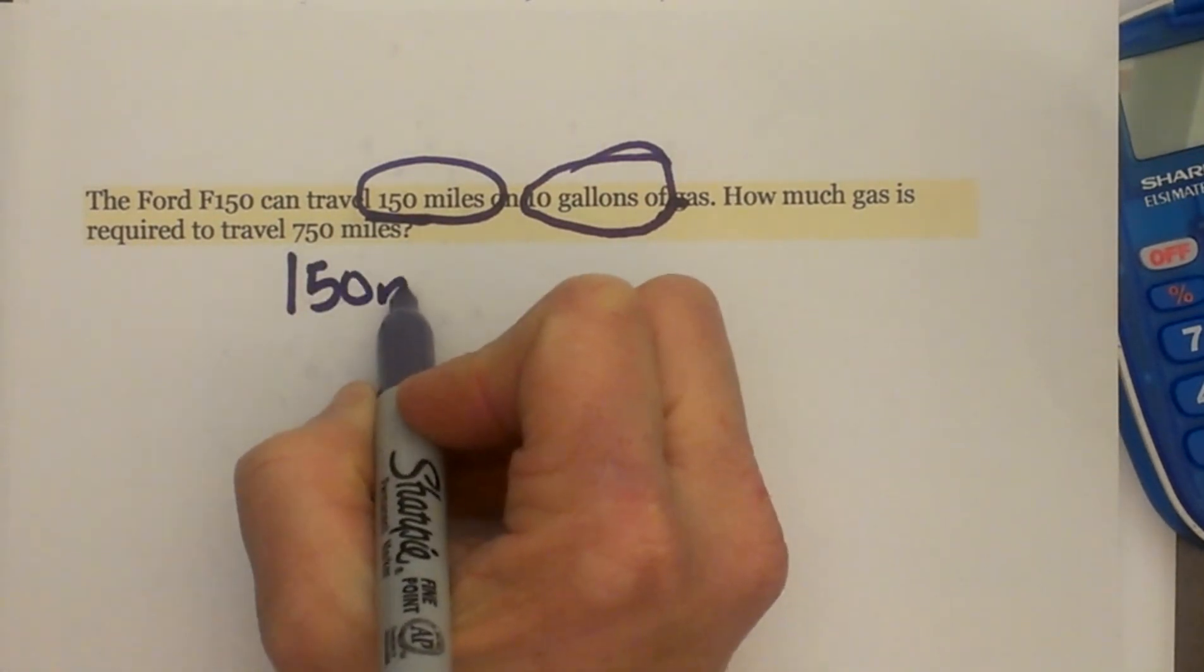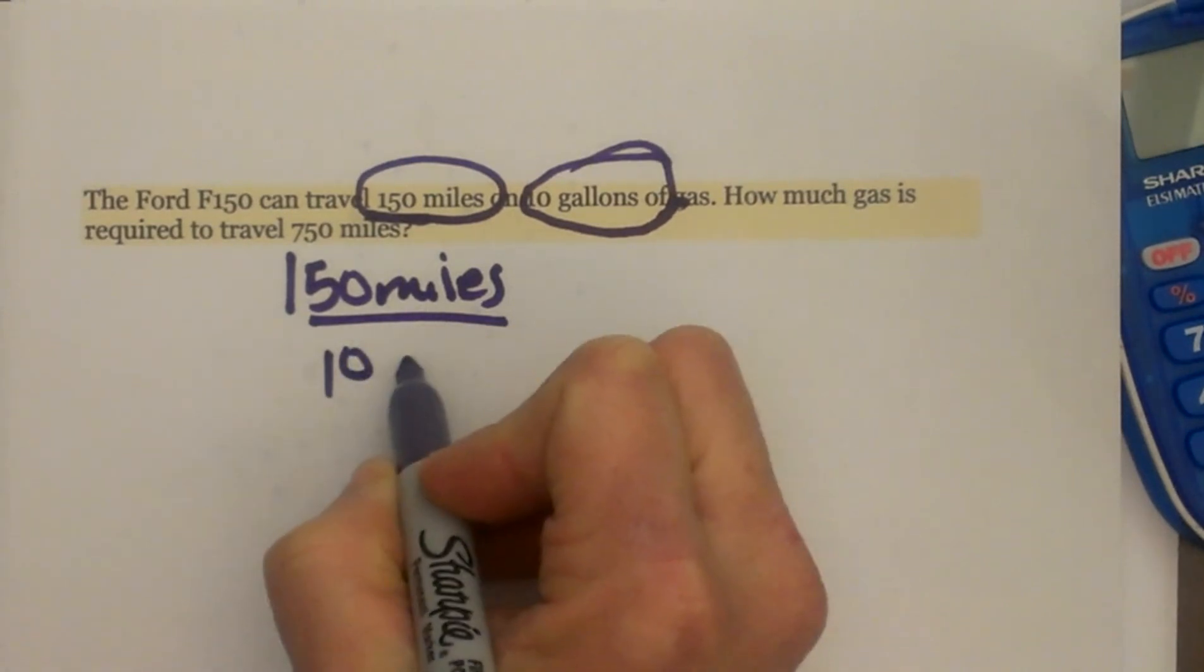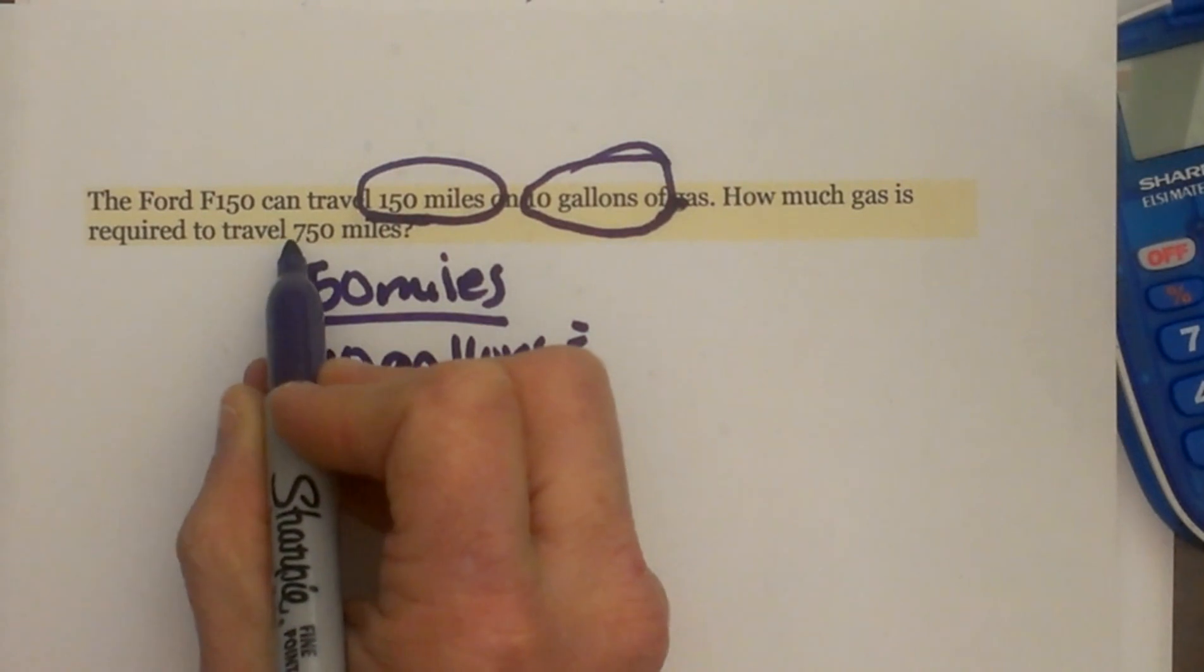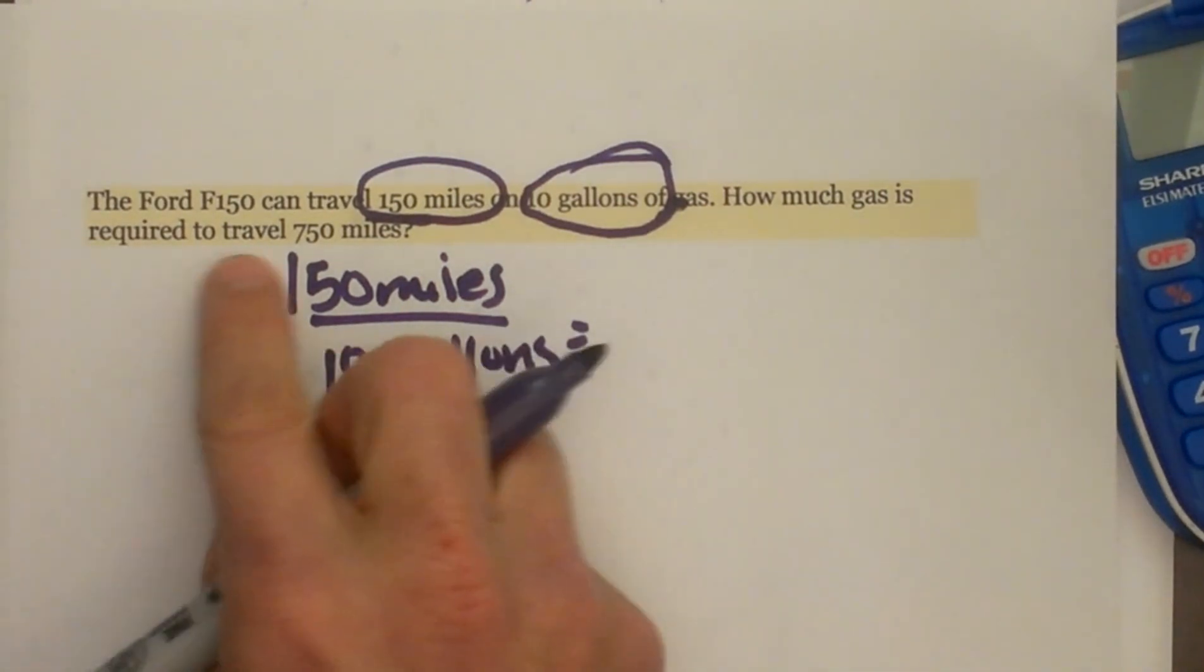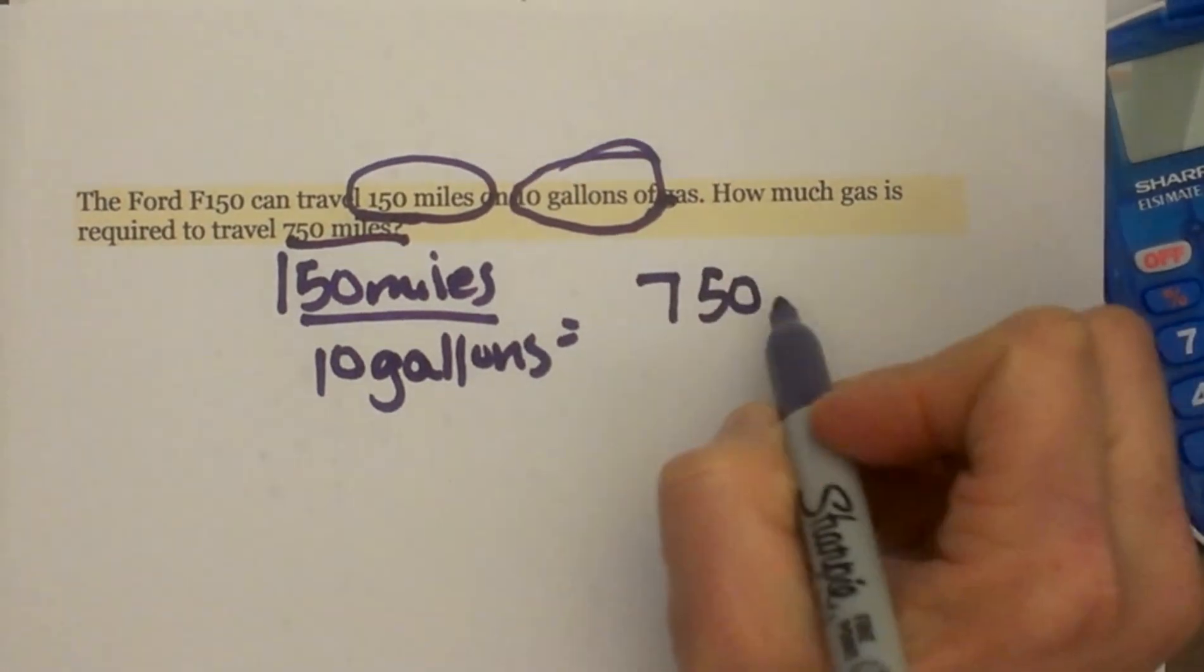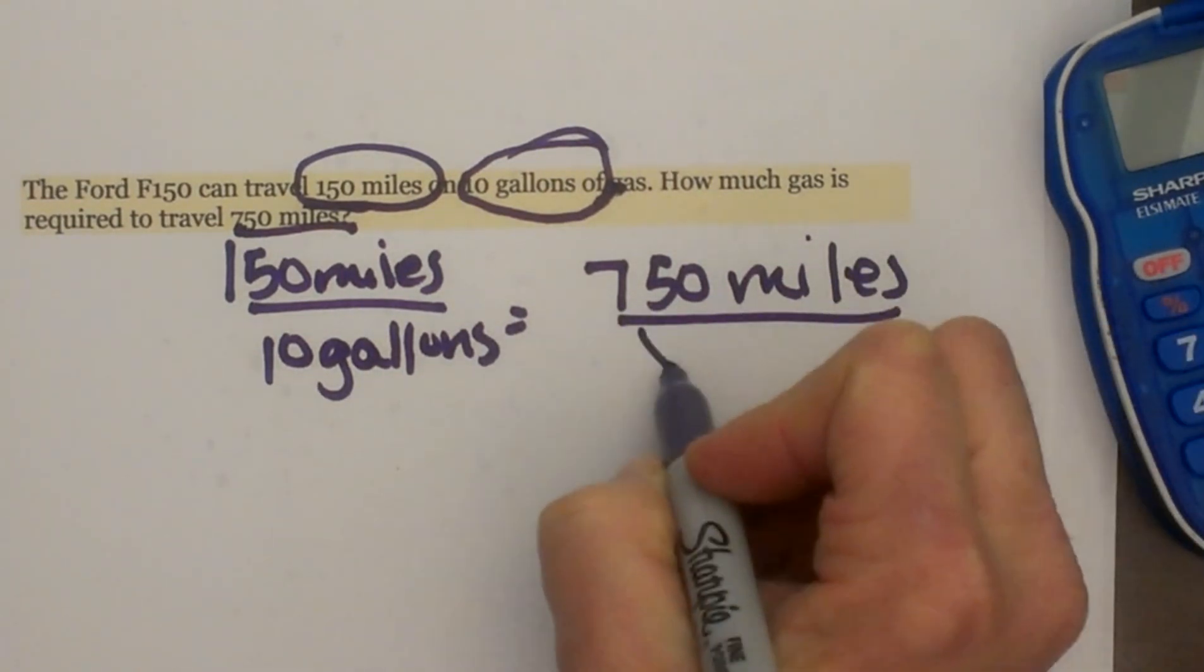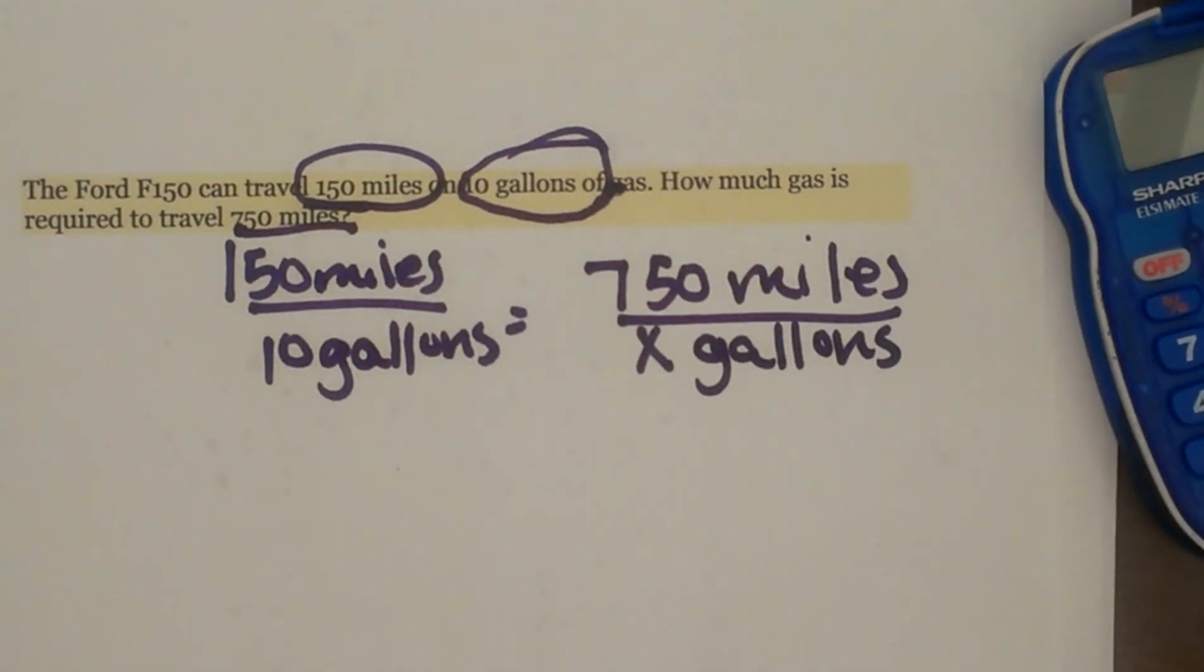So we're going to say 150 miles so miles is on top and 10 gallons is in the denominator. How much gas is required to travel 750 miles. So we've got 750 miles so that's going to go on the top because it's miles. And we have the unknown x gallons of gas. Okay, so there's my setup.